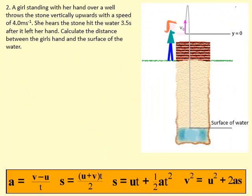A girl standing with her hand over a well throws the stone vertically upwards with a speed of 4 meters per second. She hears the stone hit the water 3.5 seconds after it left her hand. Calculate the distance between the girl's hand and the surface of the water.